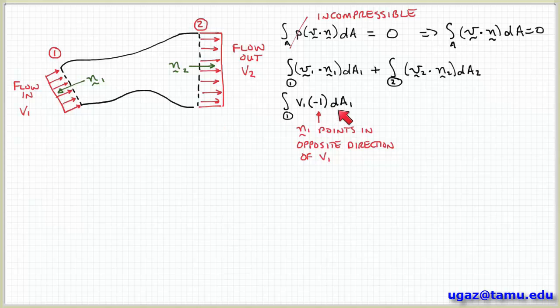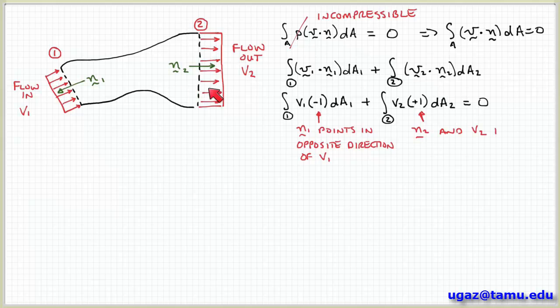If we come to surface two, notice that the velocity, the flow is leaving the control volume at the surface. And the normal vector also points outward. So N2 and V2 are in the same direction. So the signs are the same in this term.